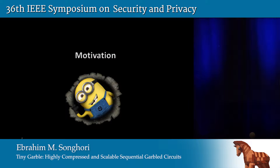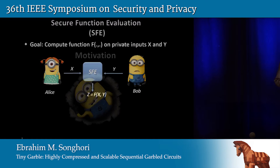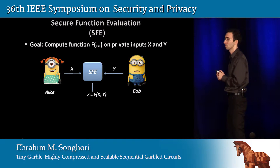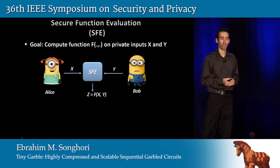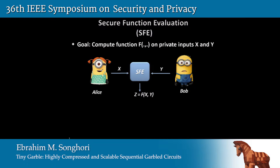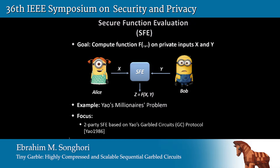Let's look at the motivation behind this work. We want to solve the problem of secure function evaluation, or SFE. In SFE, the goal is to compute a function jointly between two parties on their private data. An example is the Millionaire's problem, where two millionaires want to compare their wealth without letting each other know their amount of money in their bank account. One solution is the garbled circuit solution, which seems to be the most promising one. We are focusing on a two-party garbled circuit protocol.